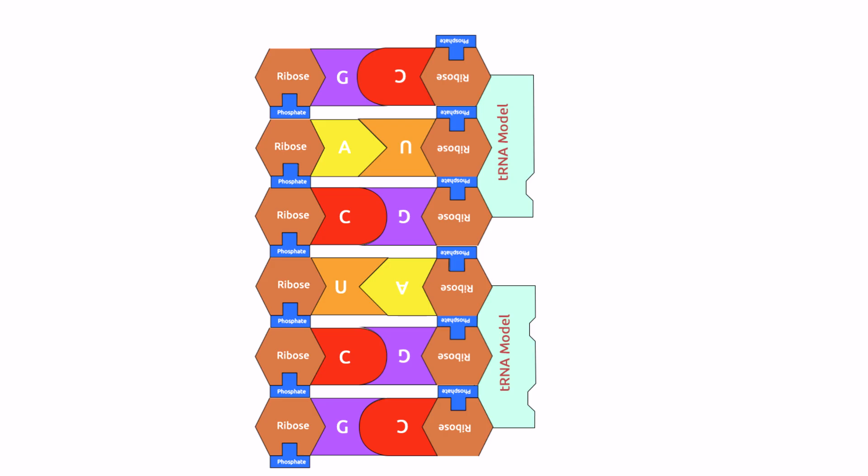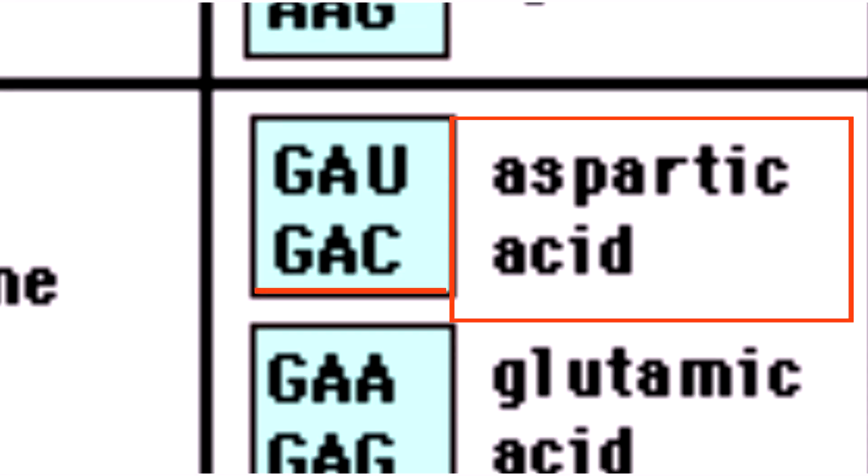So in our example, the first codon found in the mRNA is GAC. So GAC, the amino acid is aspartic acid based from the genetic code table.